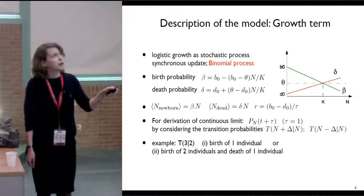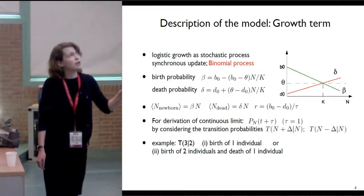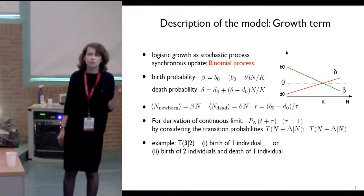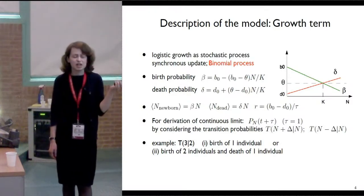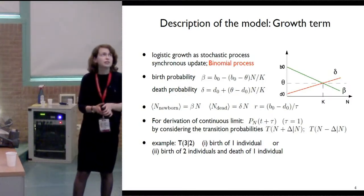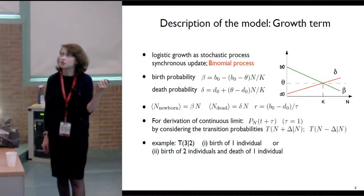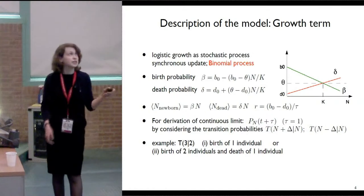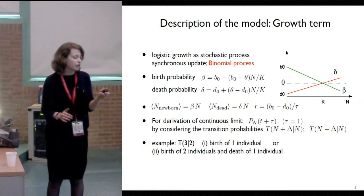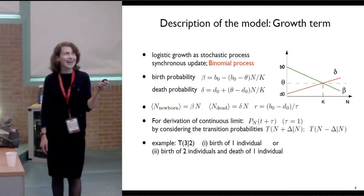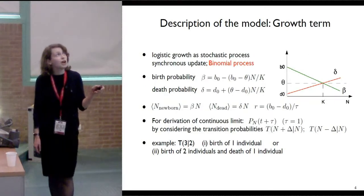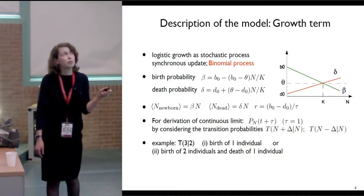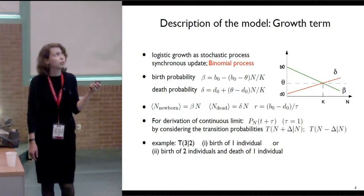Death probability is an increasing function of the number of individuals, and D0 similarly is the death probability when the number of individuals is equal to zero. At the beginning of a time step, we calculate the birth and death probability, and then based on that each individual decides if it will give birth or if it will die at the end of the time step. We look over all individuals and then do the update, so we have several births and deaths at the end of the time step, and we speak about these births and deaths as a binomial process — births and deaths are two independent binomial processes.